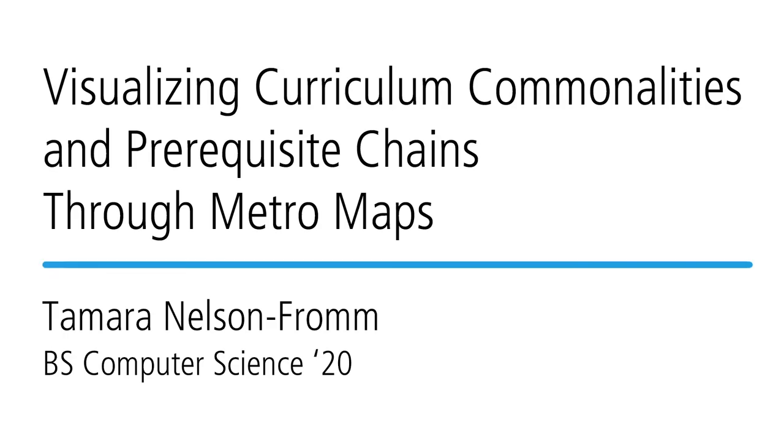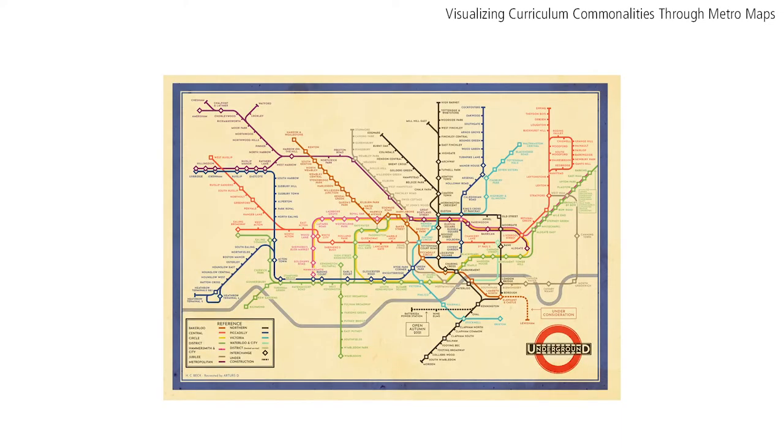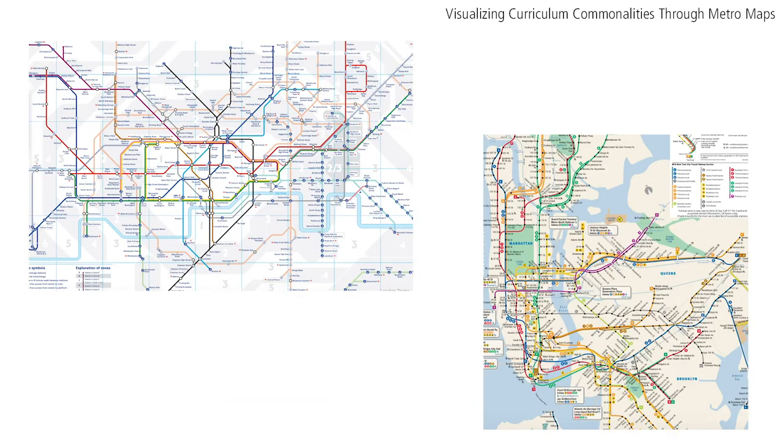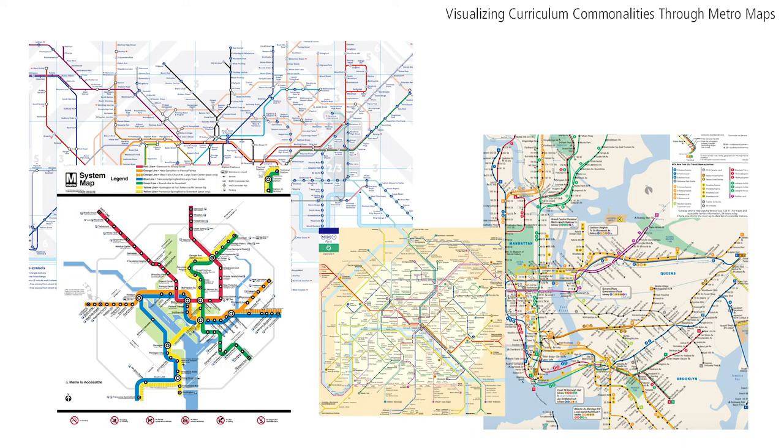The design of the modern subway map is ubiquitous. Originating with Henry Beck's 1933 London Underground map, the design has been imitated in transportation maps for cities around the world.